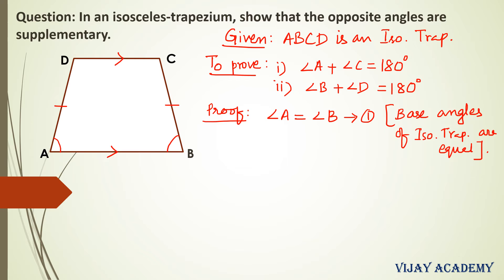Now let us use the properties of parallel lines cut by a transversal. Here, AB is parallel to CD, and let us take BC as a transversal. When AB and CD are cut by transversal BC, we know that co-interior angles are supplementary. So angle B and angle C are supplementary. Let me write angle B plus angle C equals 180 degrees. Let me write this as equation 2.